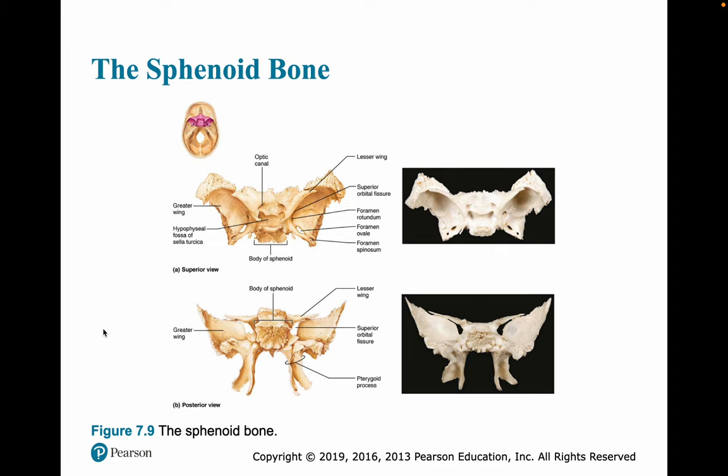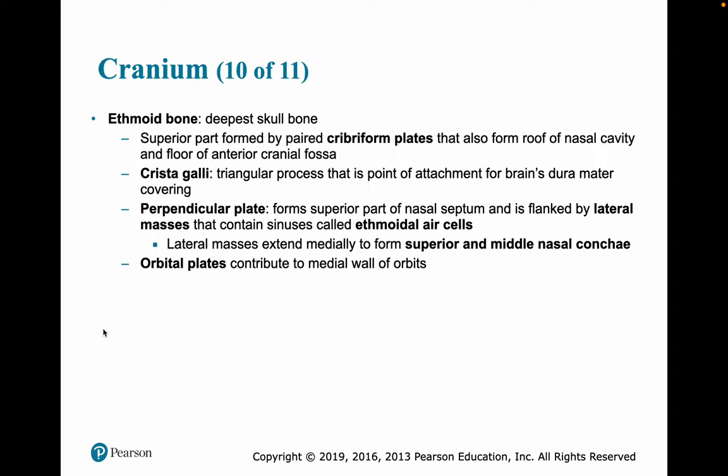Here are the sphenoid bones — they kind of look like a bat. The ethmoid bone is the deepest skull bone. Its superior parts are formed by the cribriform plate, which also forms the roof of the nasal cavity and the floor of the anterior cranial fossa. The crista galli are triangular processes here serving as the point of attachment for the dura mater. The perpendicular plate forms the superior nasal septum, flanked by lateral masses that also contain sinuses called ethmoid air cells. The lateral masses extend medially to form the superior and middle nasal conchae, and the orbital plates contribute to the medial walls of the orbits.